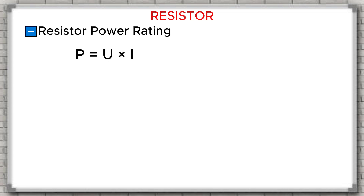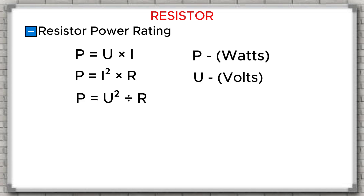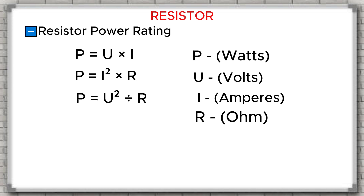P equals U times I. P equals I squared times R. P equals U squared divided by R. Where P is power measured in watts, U is the voltage across the resistor in volts, I is the current through the resistor in amperes, and R is the resistance value in ohms. From these formulas, we can see the power consumed by a resistor depends on the current flowing through it or the voltage across it.